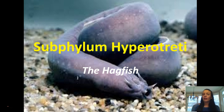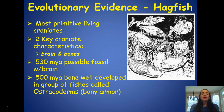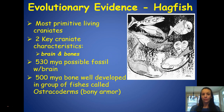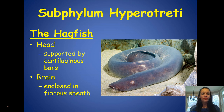The first subphylum we'll discuss is Hyperotreti — the hagfish. These are the most primitive living craniata, meaning they have a skull surrounding their brain. Around 530 million years ago there are possible fossils with a brain, and 500 million years ago bones were well developed in fishes called astrachoderms, which had a kind of bony armor. The hagfish has a head and a brain, with the head supported by cartilaginous bars and the brain enclosed in a fibrous sheath.